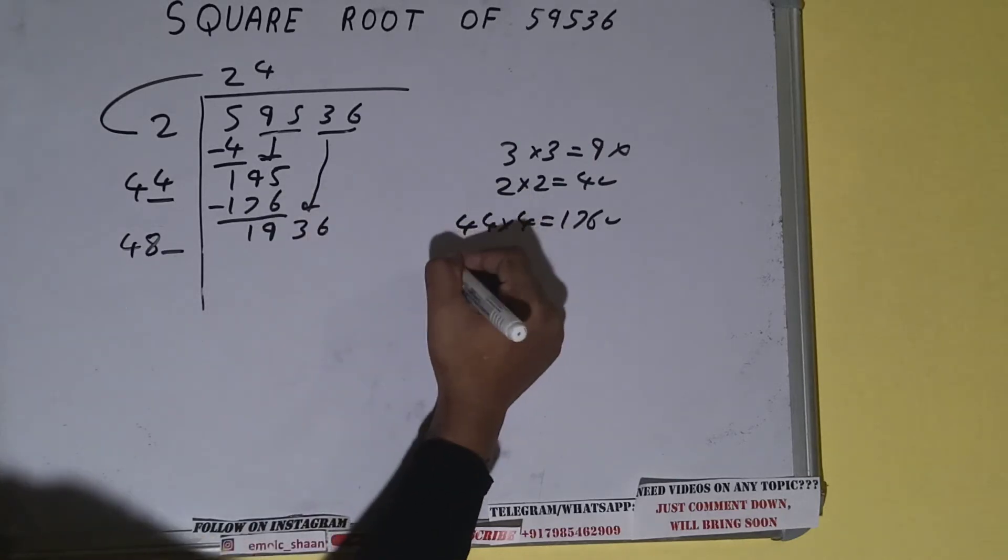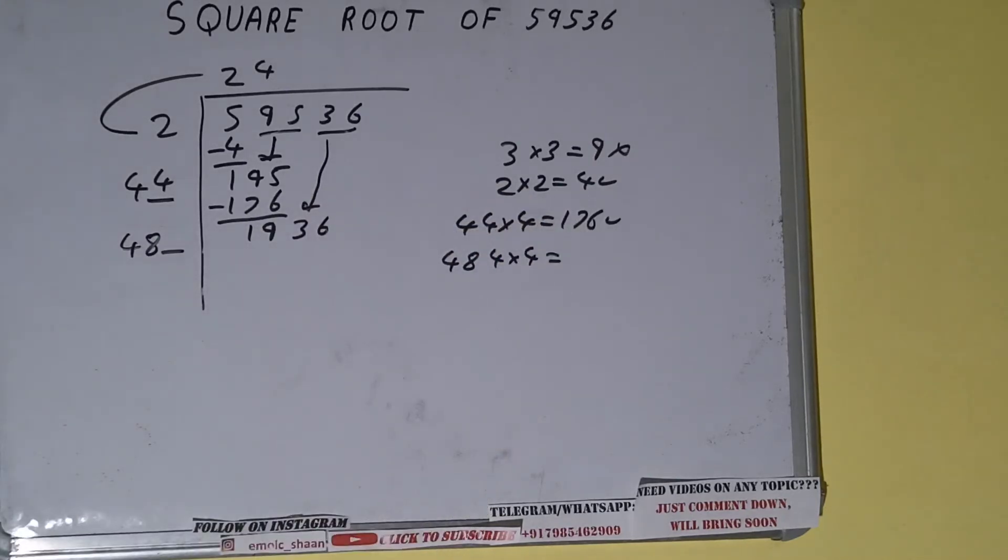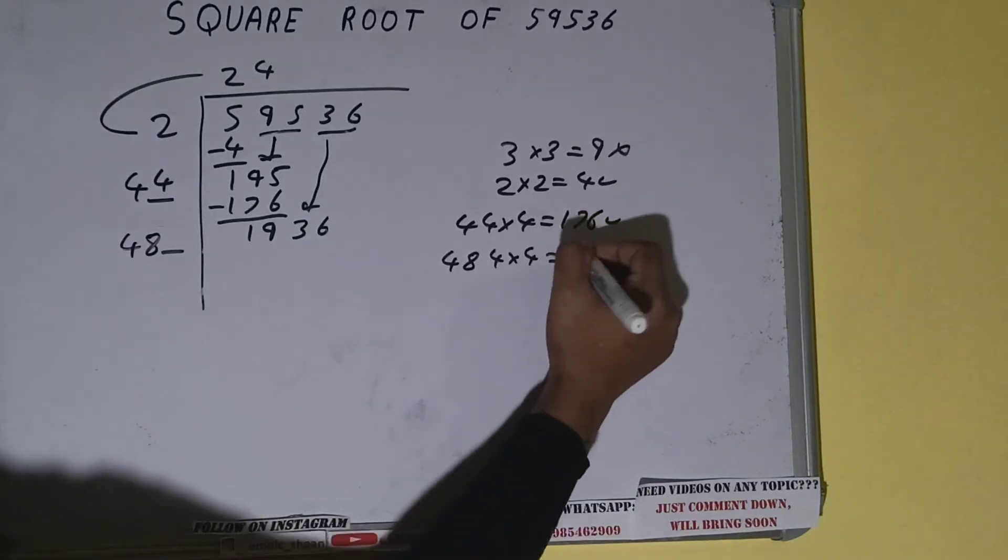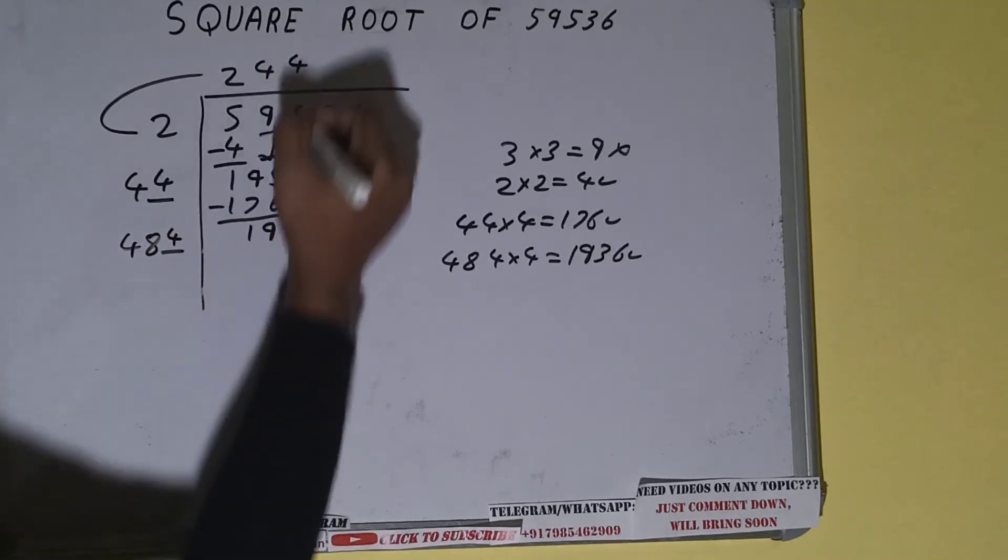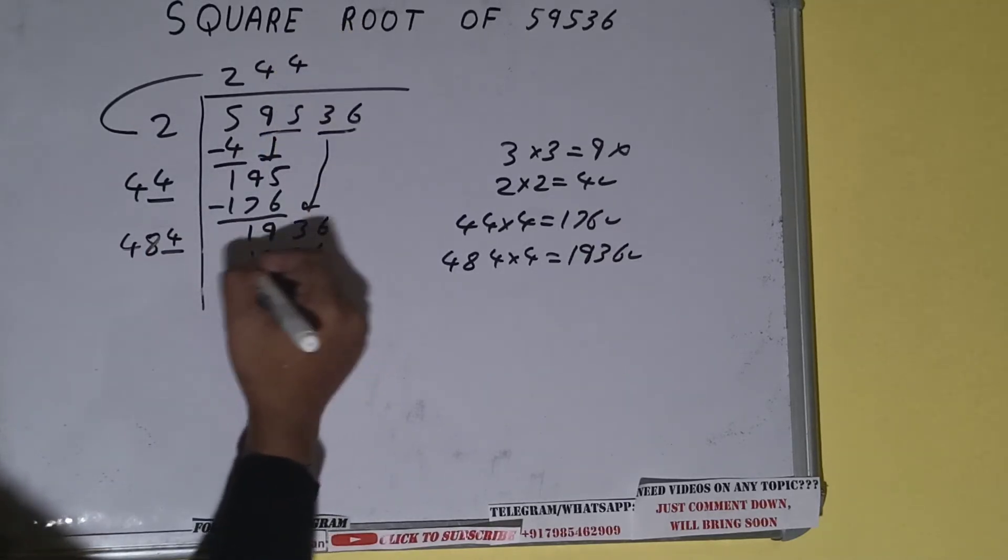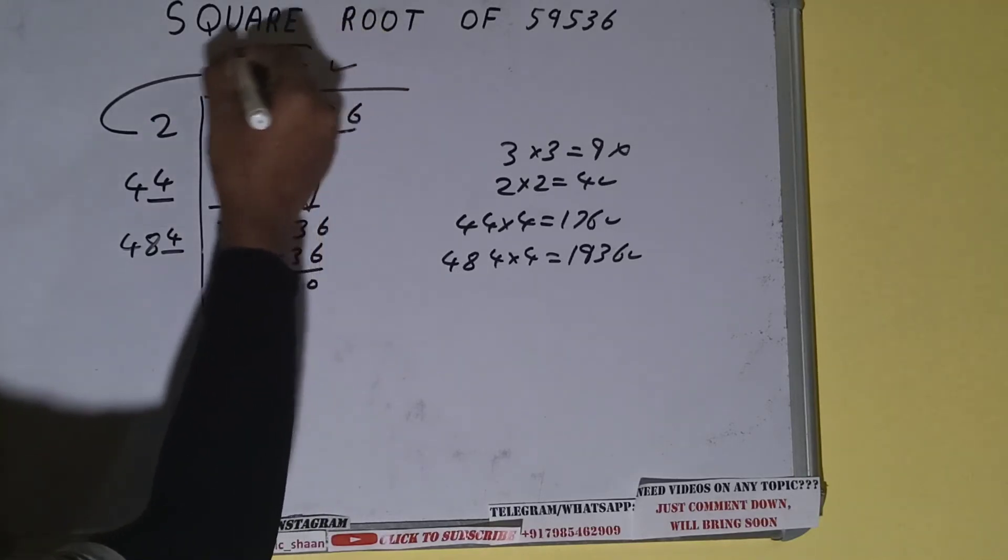So 484 we can try, it will be 1936, which is good to take. So 4 here and 4 here, 1936 subtract, and we'll be getting 0.